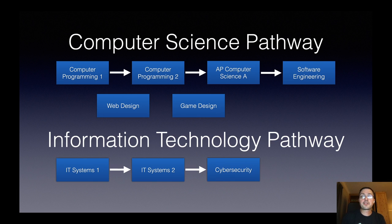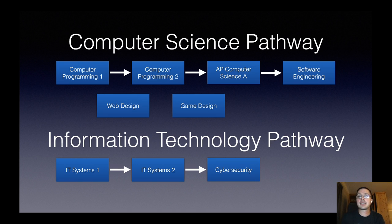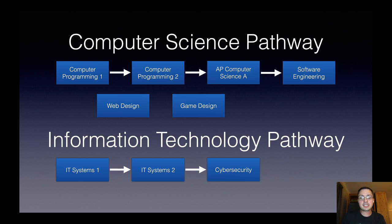In our school district, we are fortunate to have a strong computer science pathway and a strong IT pathway. The computer science pathway begins with Computer Programming 1 and Computer Programming 2, each one-semester courses, followed by AP Computer Science A, a full year AP course. The capstone course for Computer Science is Software Engineering. We also have electives: Web Design and Game Design. Our IT pathway starts with IT Systems 1 and IT Systems 2, each one-semester courses. They are recommended but not required, as they provide useful background leading up to our IT capstone course, which is this course — cybersecurity.